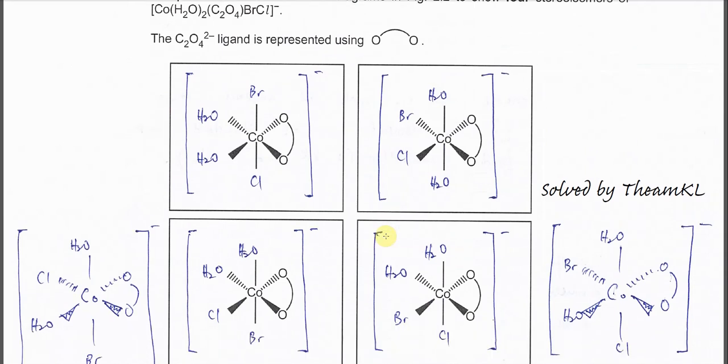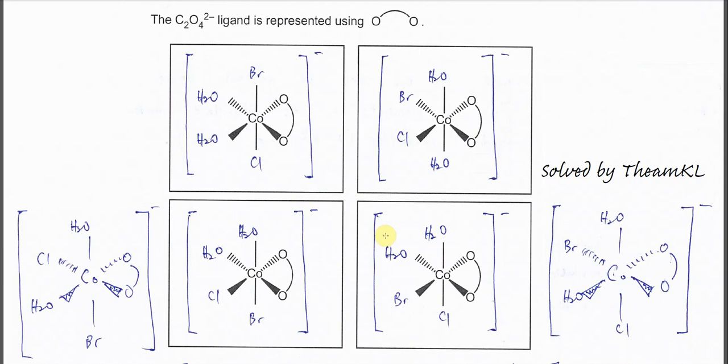Okay so first we do the easier one, the cis-trans isomers. You try to, because the bidentate ligand C2O42- is already there, here. So what you need to do is just fill up the four monodentate ligands, the H2O, bromide and chloride.